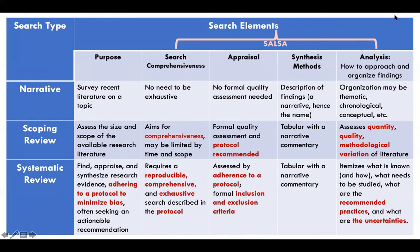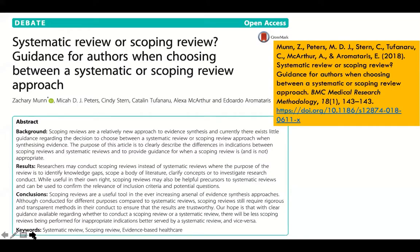After Grant and Booth — or Booth and Grant, I always mix them up — we find a number of newer studies that help us see the differences between scoping and systematic reviews even more clearly. One of my favorite recent sources is this one by Munn and others. Munn is part of the Joanna Briggs Institute's team — an Australian team that does absolutely fabulous work on knowledge synthesis.